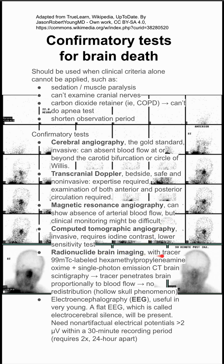Radionuclide brain imaging uses a tracer and single-photon emission CT. The tracer penetrates the brain proportionally and there is no redistribution. This is what you see in the background here.